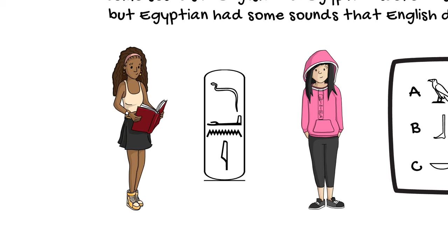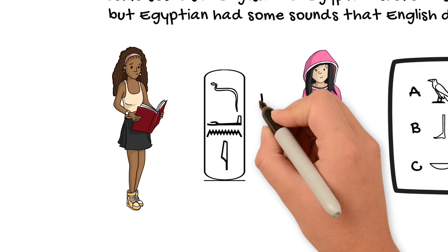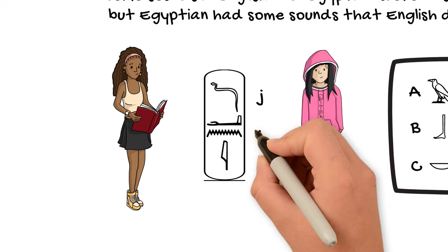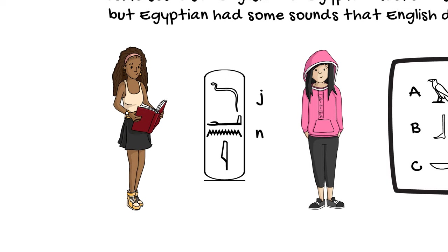With some further study, Jane discovers that snake sign is really a great choice for the first sound in her name as it's basically equivalent to the English J, a J sound. Likewise, the water sign in the third position is basically equivalent to our N, so this is a good choice too. However, she soon discovers that the other two signs aren't quite right.